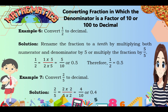Now let's have the topic: converting a fraction in which the denominator is a factor of 10 or 100 to decimal. Convert 1 half to decimal. Let's rename the fraction to a tenth by multiplying both numerator and denominator by 5. So 1 times 5 equals 5, and 2 times 5 equals 10, giving us 5 over 10, or 0.5. Therefore, 1 half is equal to 0.5.